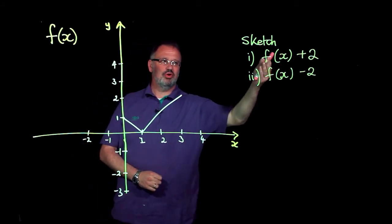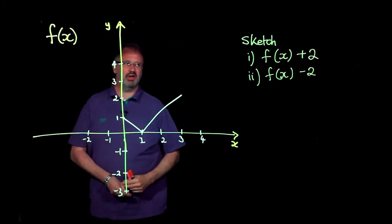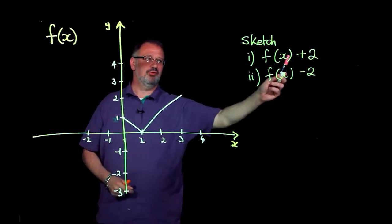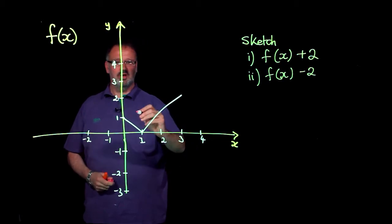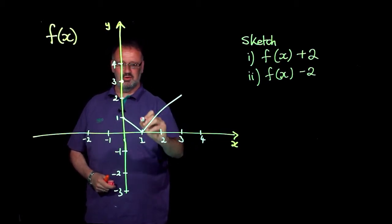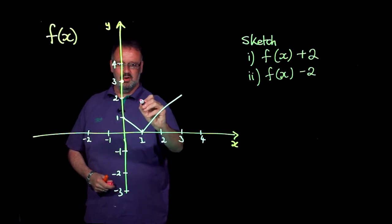When we add 2 onto the function like this, it is a translation of positive 2 in the y direction. So this first function will give me this point here goes up by 2 to there, this one goes up by 2 to there.